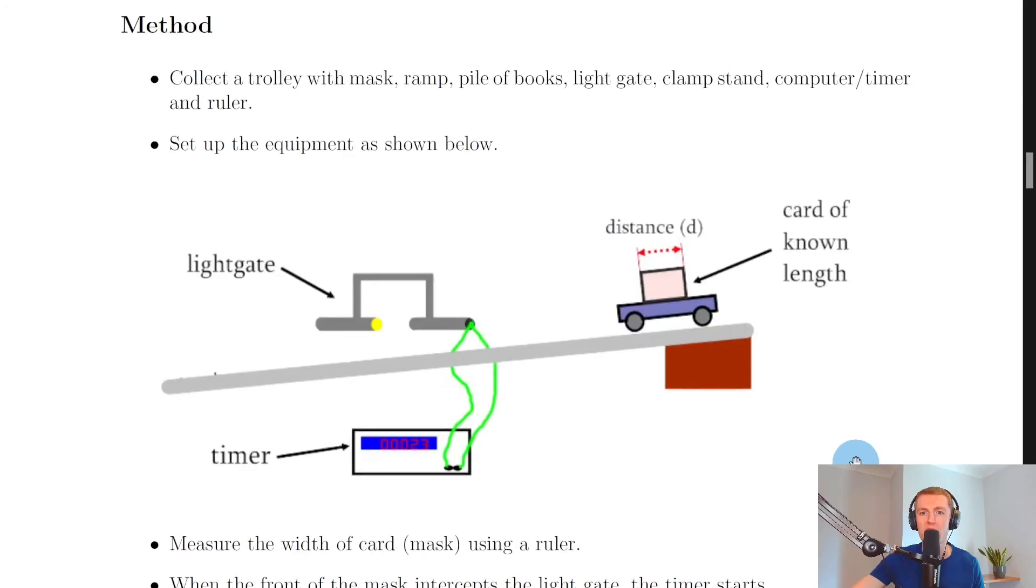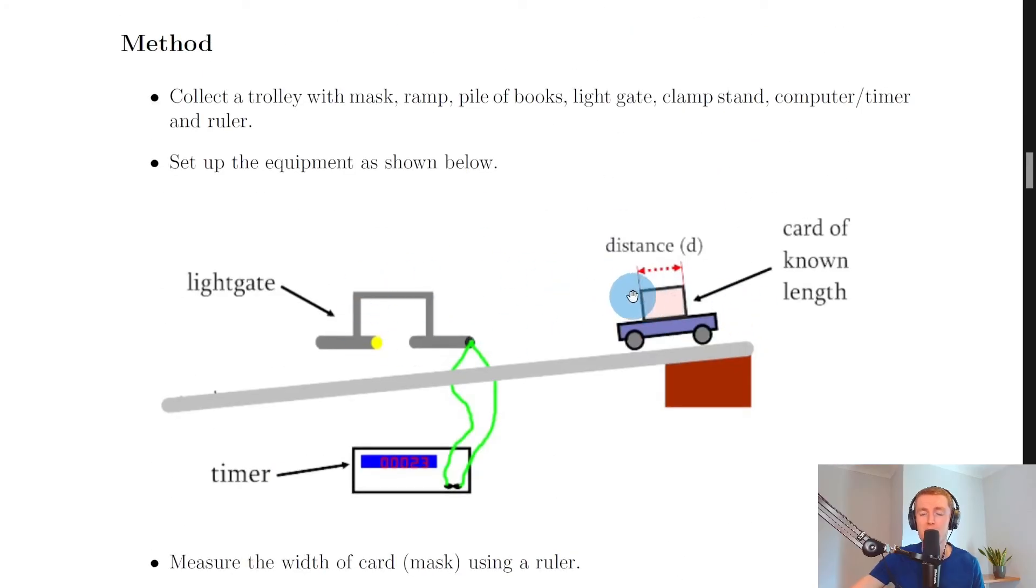Therefore we'll have more of an instantaneous value, and that means it's going to be more accurate. Now I'm just going to show you a quick simulation to help you better understand measuring instantaneous speed.